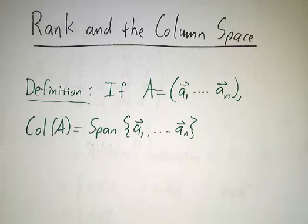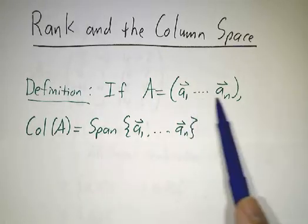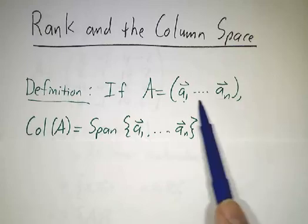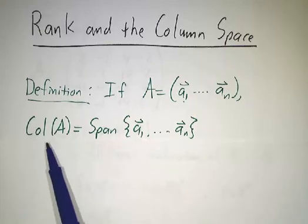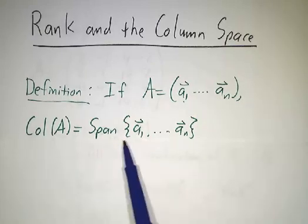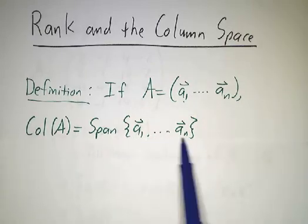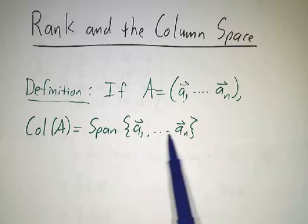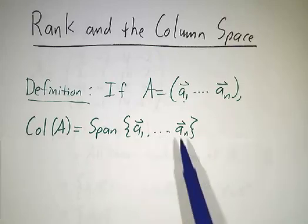So if we have a matrix, let's think of it as being made up of its columns laid side by side. Then the column space is by definition the span of those columns, that is to say, all possible linear combinations of the columns of A.